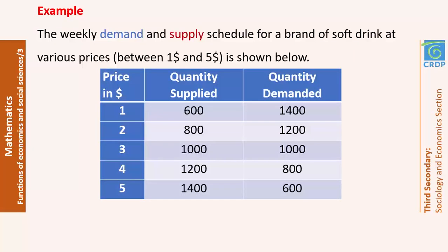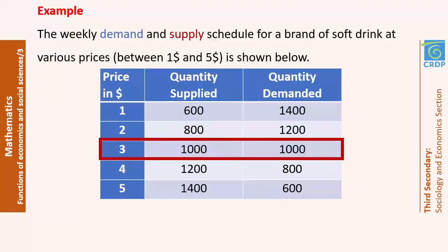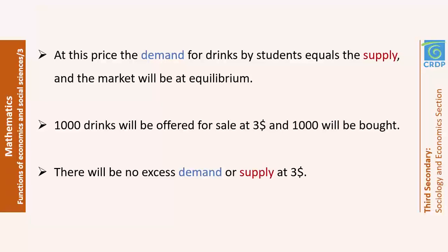Check this example. The weekly demand and supply schedule for a brand of soft drink at various prices between $1 and $5 is shown below. For a price of $1, the quantity supplied is 600 units and the quantity demanded is 1,400. But observe the price when it's $3: the quantity supplied and the quantity demanded are both 1,000, meaning the market is at equilibrium. At this price, the demand for drinks is equal to the supply, so 1,000 drinks will be offered for sale at $3 and 1,000 will be bought — no excess in demand or supply.